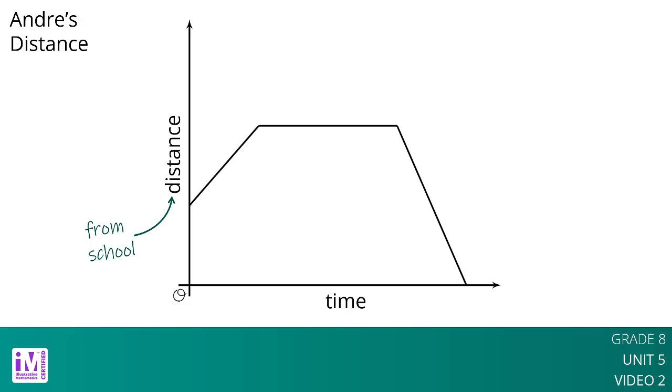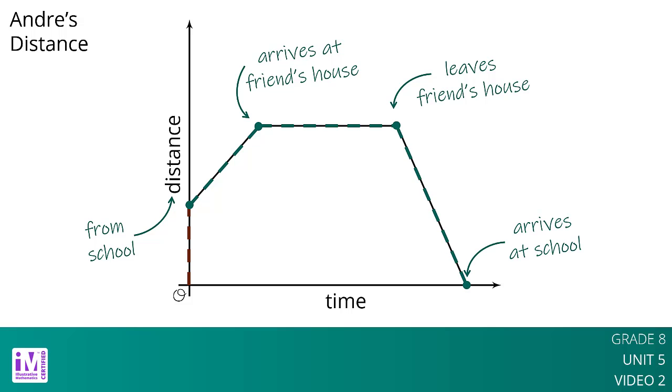If instead the graph is showing distance from school, the story may be Andre starts out at home, moves further away, maybe to a friend's house, stays there for some time, then leaves the friend's house to go to school.